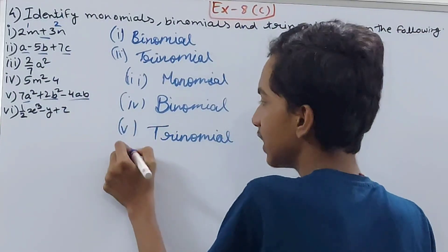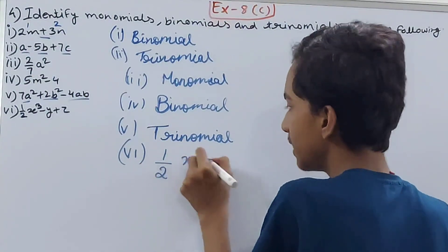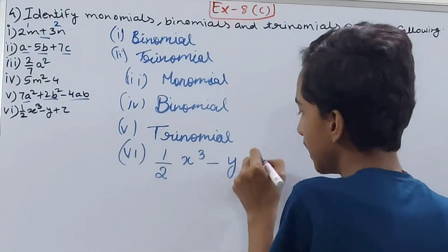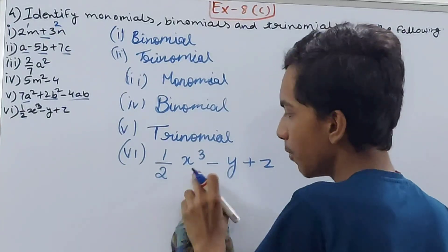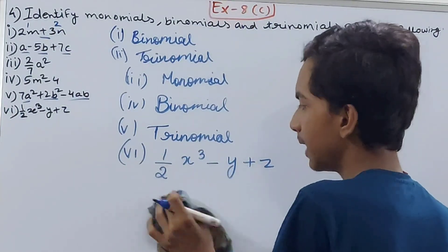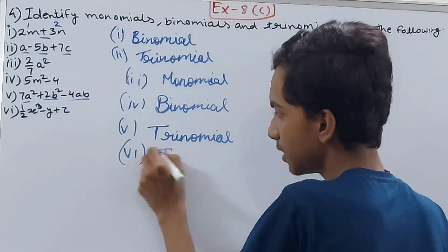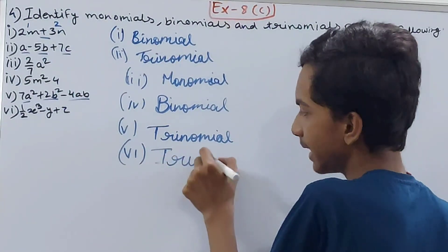The sixth part: 1/2 x³ minus y plus z. Same thing here - you can see three terms with minus and plus. You don't have to look at these cube signs. This is a trinomial because it has three terms.